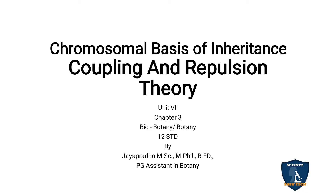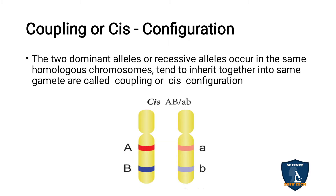Today we are going to see coupling and repulsion theory in the chromosomal basis of inheritance in Botany chapter 3. First you must know coupling or cis configuration. Coupling means the dominant or recessive allele present on the homologous, that is the same chromosome — they pass the alleles to the same gamete. That is called coupling or cis configuration.